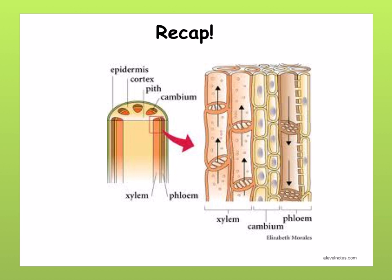Just to recap: xylem and phloem form the vascular bundle in a plant. In a dicotyledonous plant, the vascular bundles are located towards the edge of the stem, as you can see in this diagram. Notice that the xylem is located towards the inside of the stem, and between the xylem and phloem is the cambium.